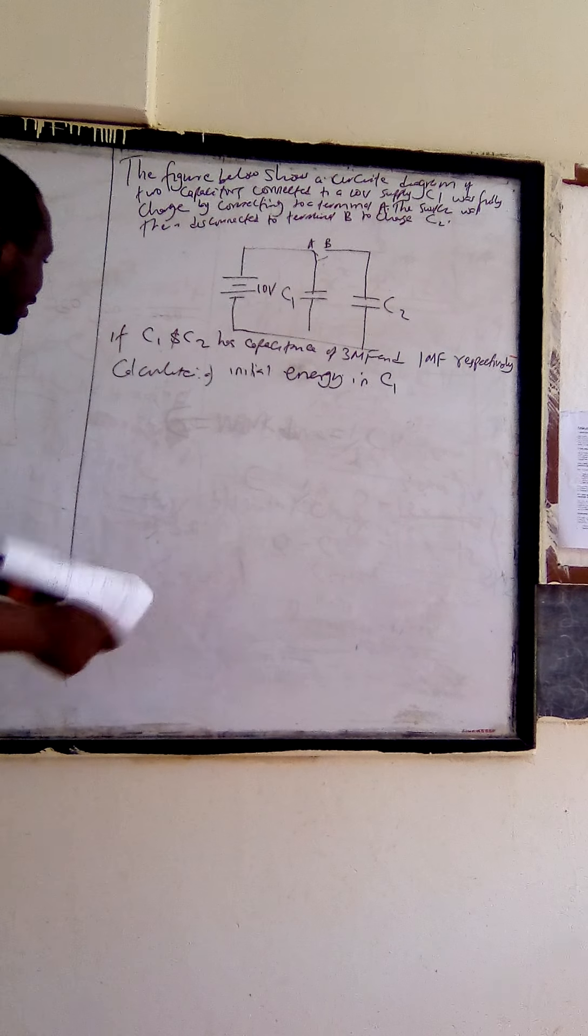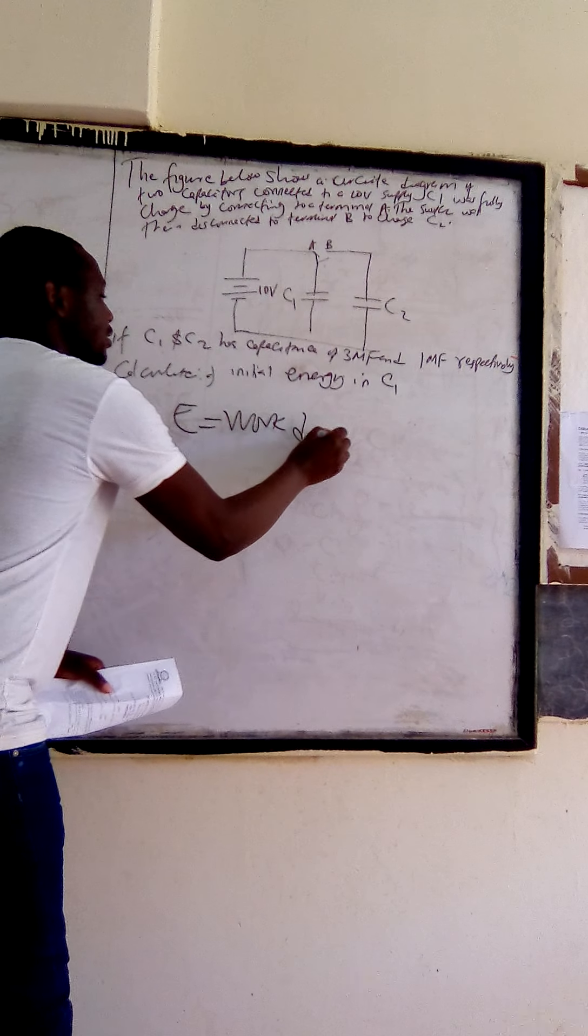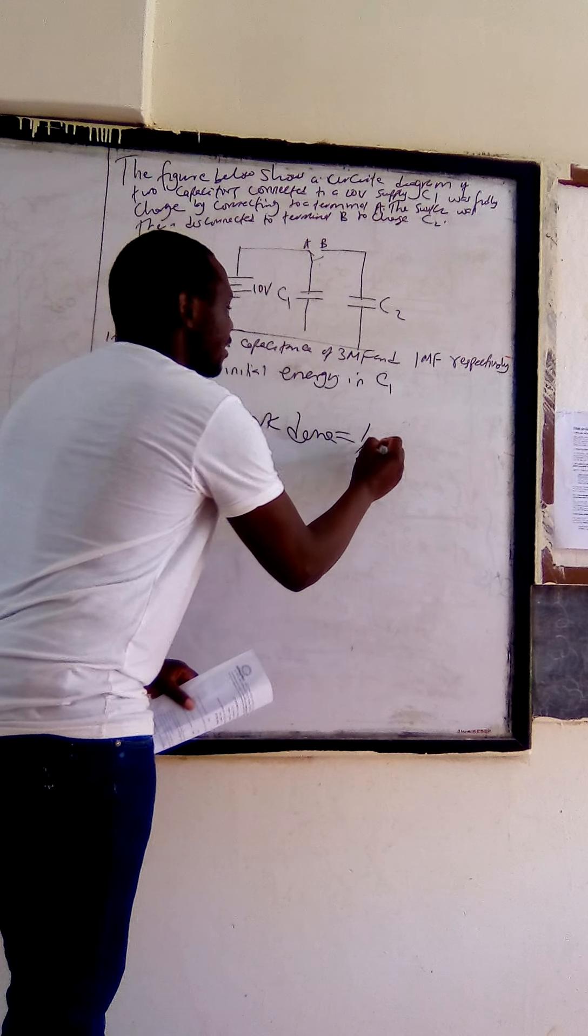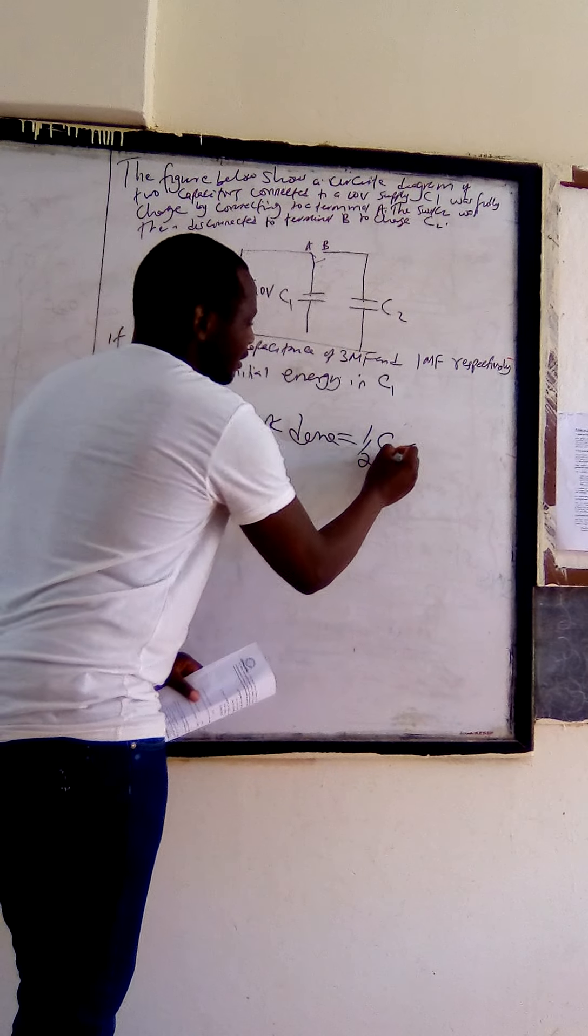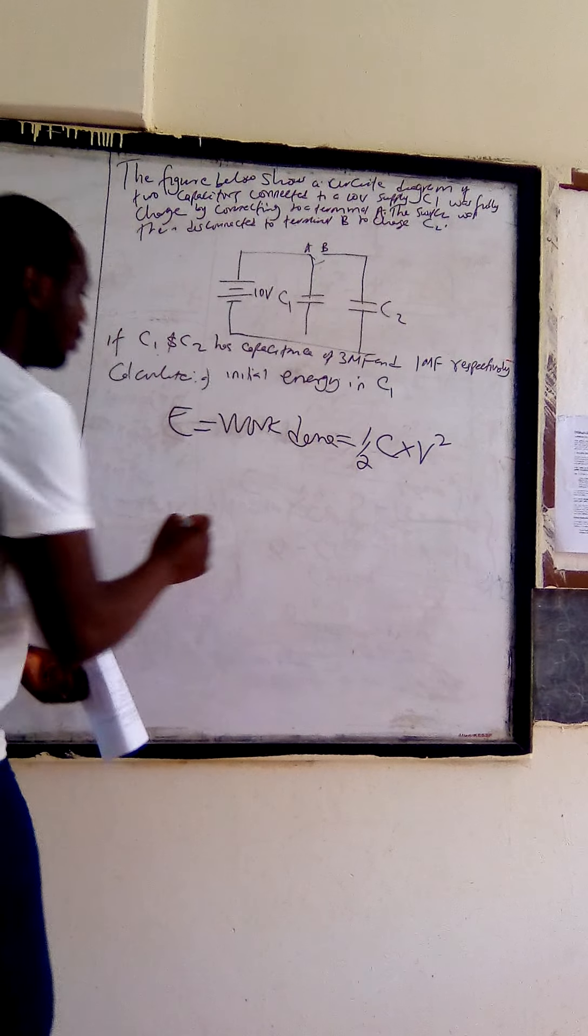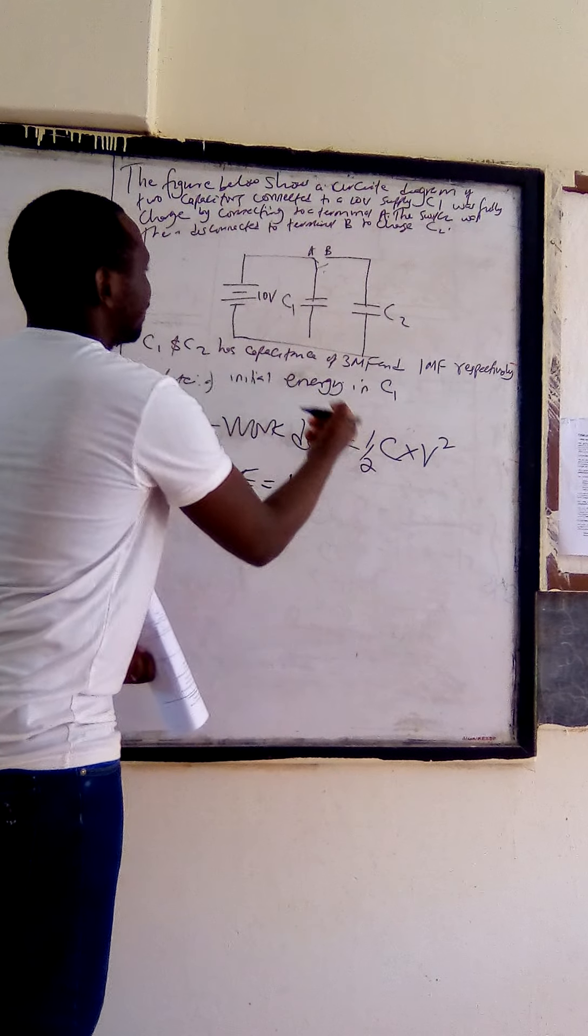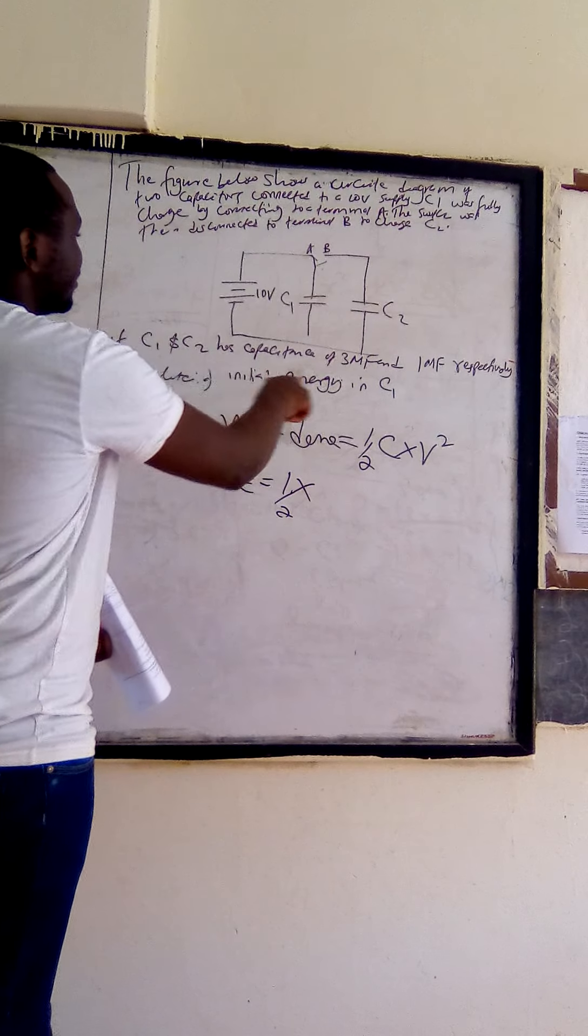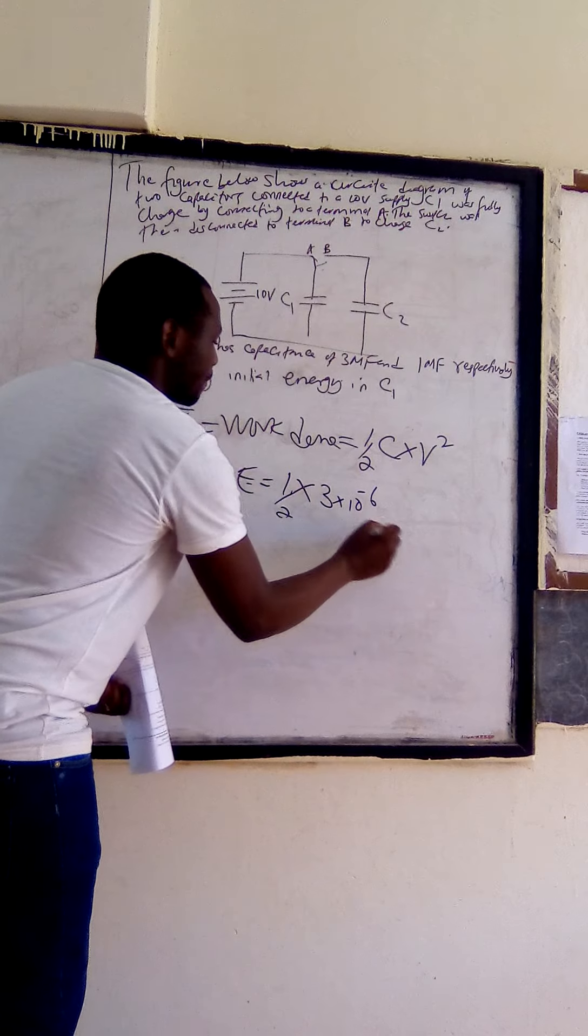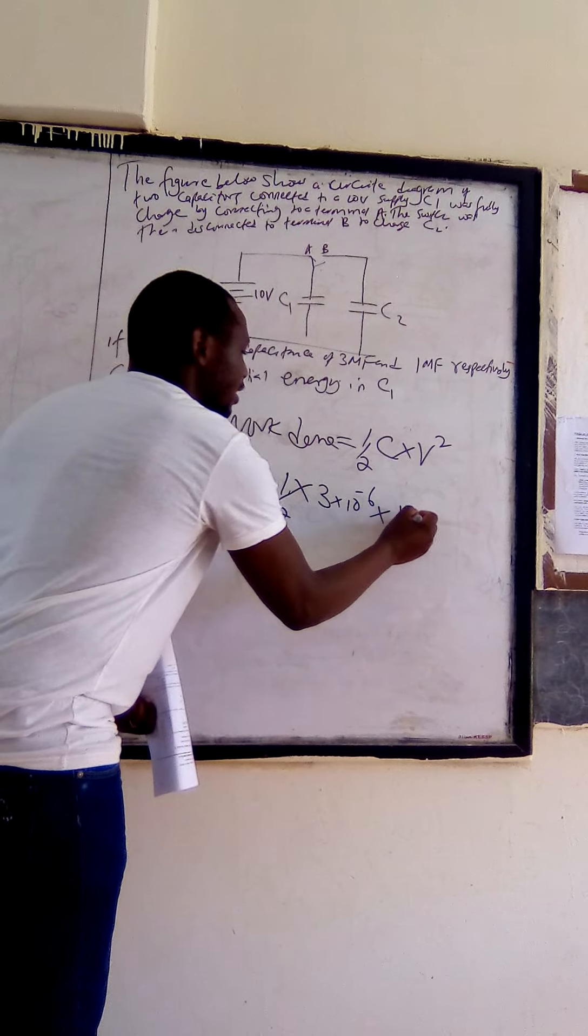We know that energy is given by work done, which is equal to half multiplied by capacitance multiplied by voltage squared. So energy is given by half, the capacitance of C1 we are told is 3 microfarad, that is 3 times 10 to the negative 6, multiplied by V. V in this case is 10, so 10 squared.